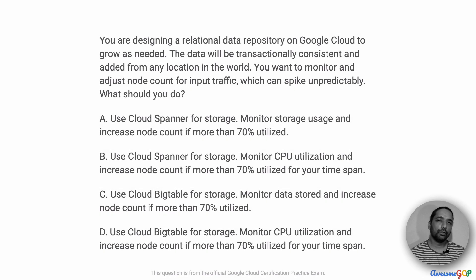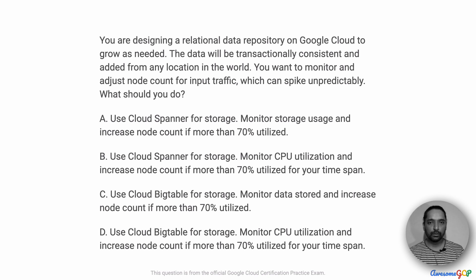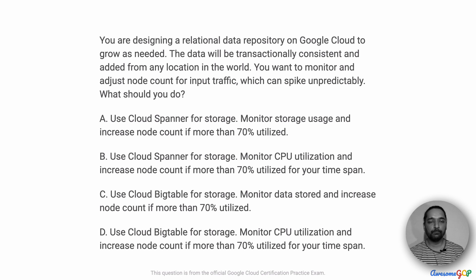In this project scenario, you're designing a relational data repository on Google Cloud to grow as needed. The data will be transactionally consistent and added from any location in the world. You want to monitor and adjust node count for input traffic which can spike unpredictably. What should you do?